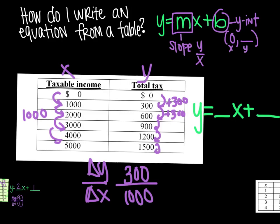I can simplify this a little bit. And I will end up with 3 over 10 as my slope. So I'm going to write y equals 3 tenths here.